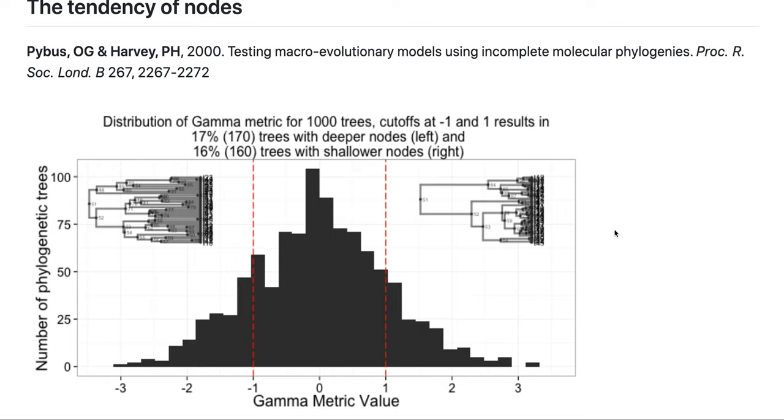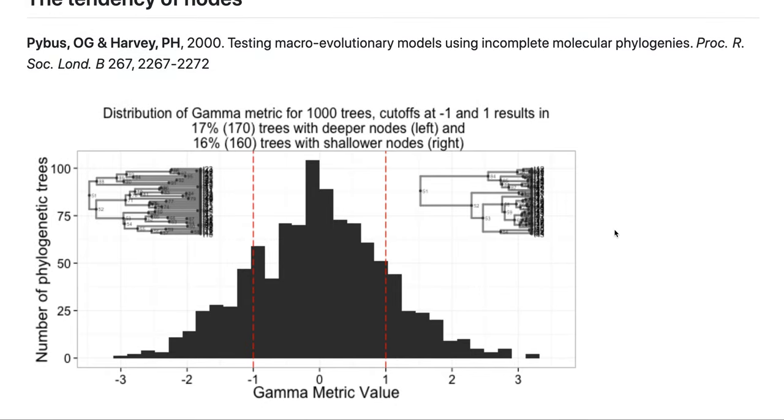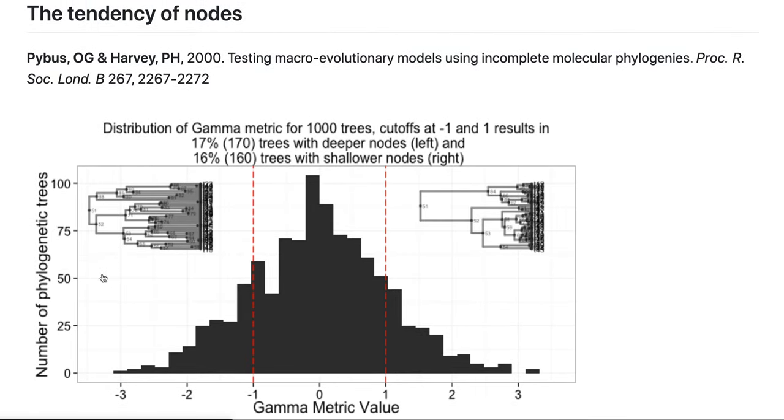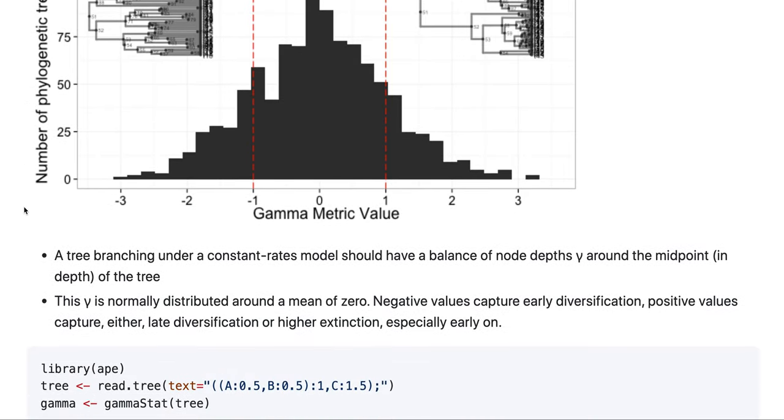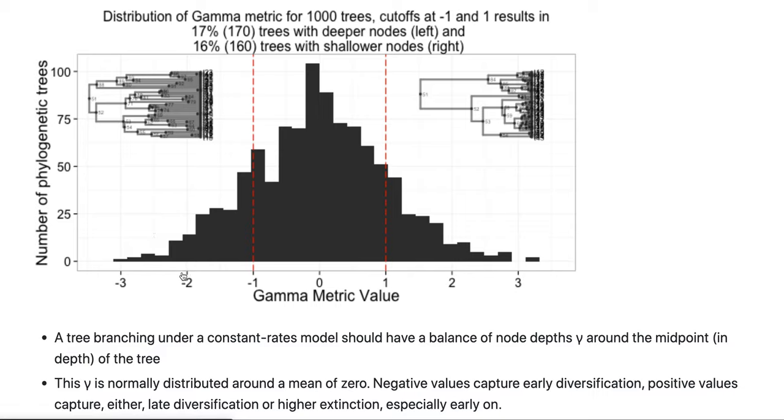Let's not dwell too much on this, but there's numerous metrics that can express, for example, early diversification or later, and a pretty common one is called Pybus's gamma. And what is kind of convenient about that is that you can generate basically a distribution of what's under the null model, what the gamma values would be.